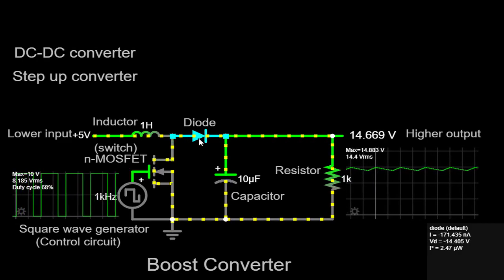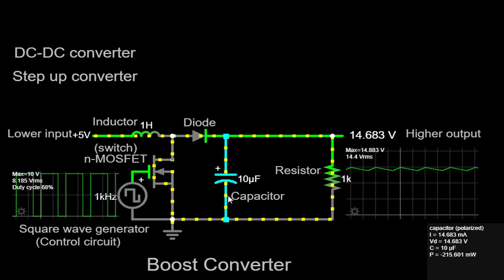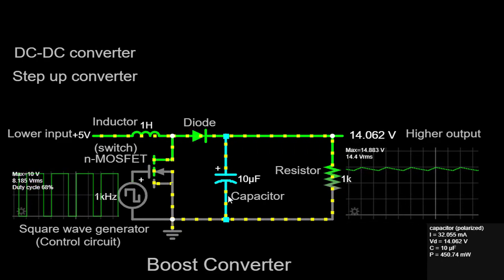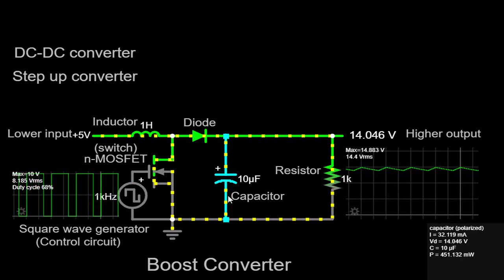Additionally, we have a capacitor of 10 microfarads connected in parallel with the diode. This capacitor acts as a filter and helps smoothen the output voltage, reducing any ripples or voltage fluctuations that might be present.